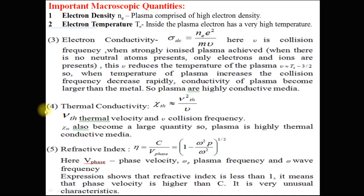After electrical conductivity, we will discuss thermal conductivity. Thermal conductivity is denoted by chi-th, which is equal to Vth squared upon mu, where Vth is the thermal velocity and mu is the collision frequency. Chi-th also becomes a large quantity, so plasma is a highly thermally conductive medium.